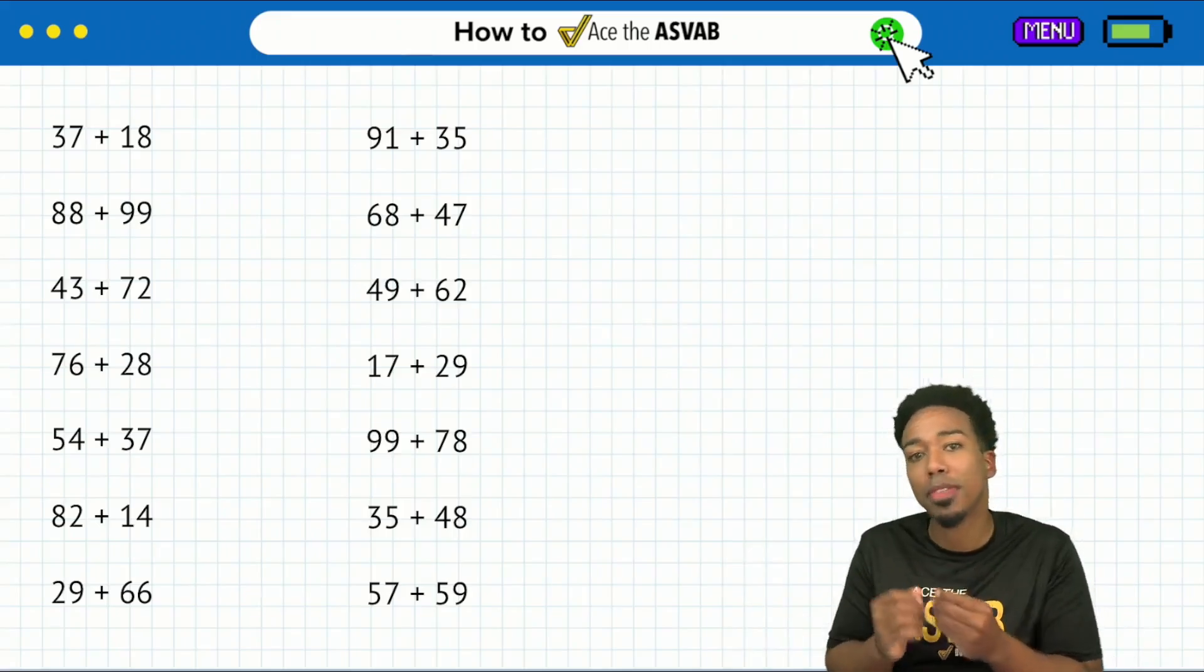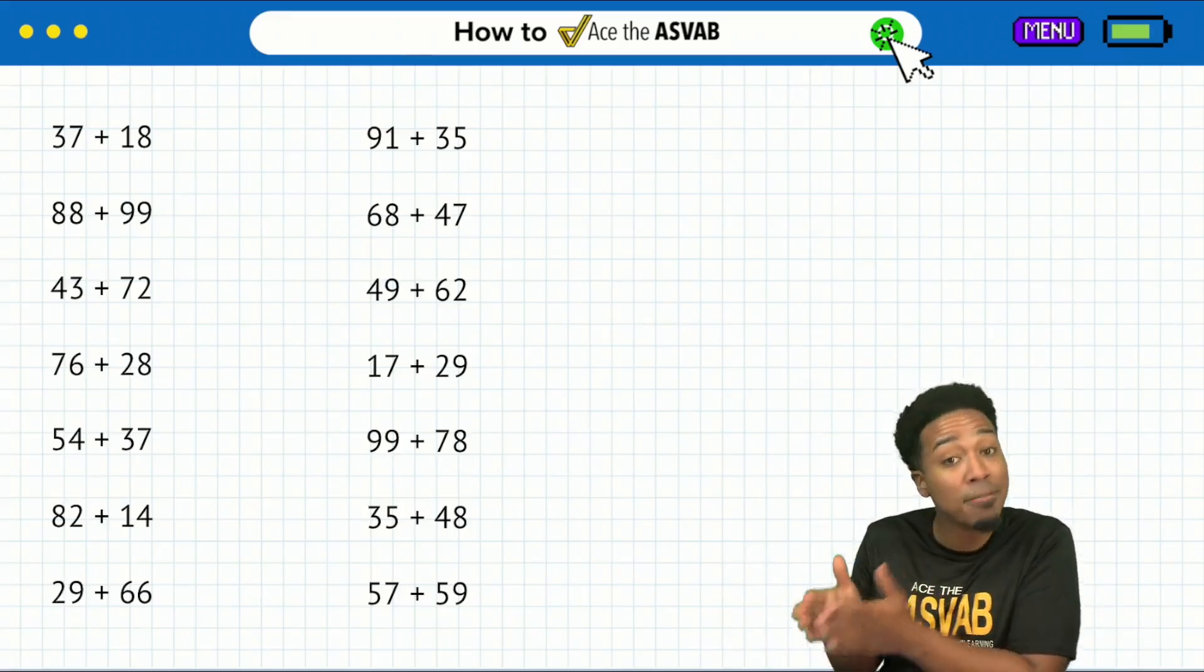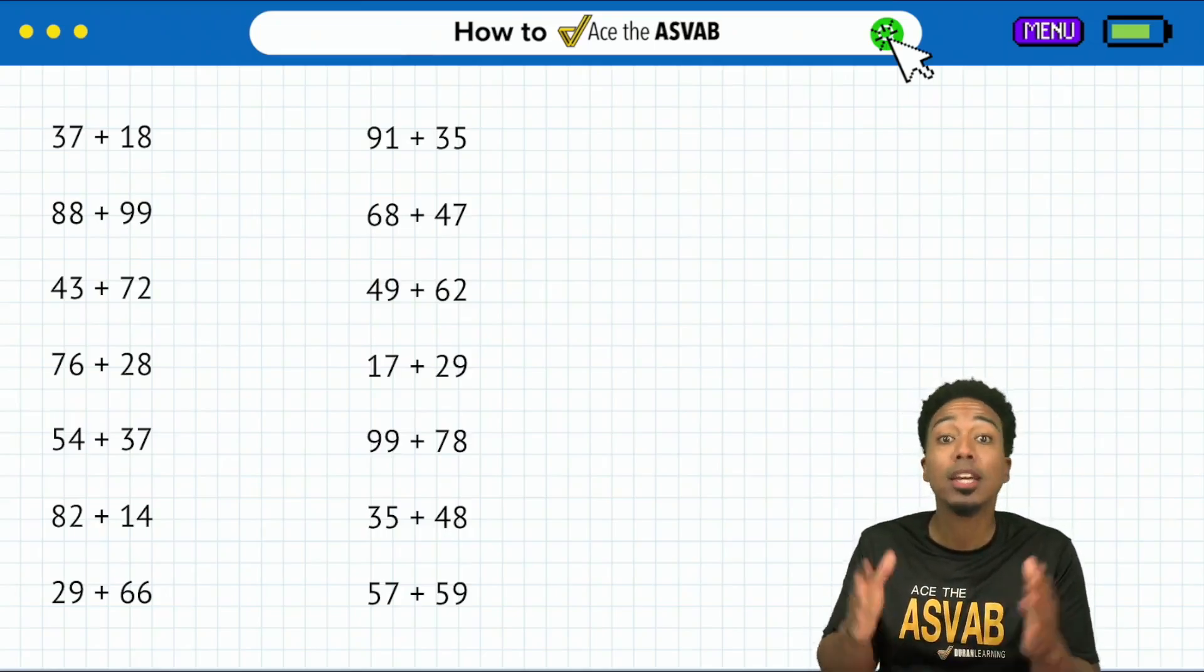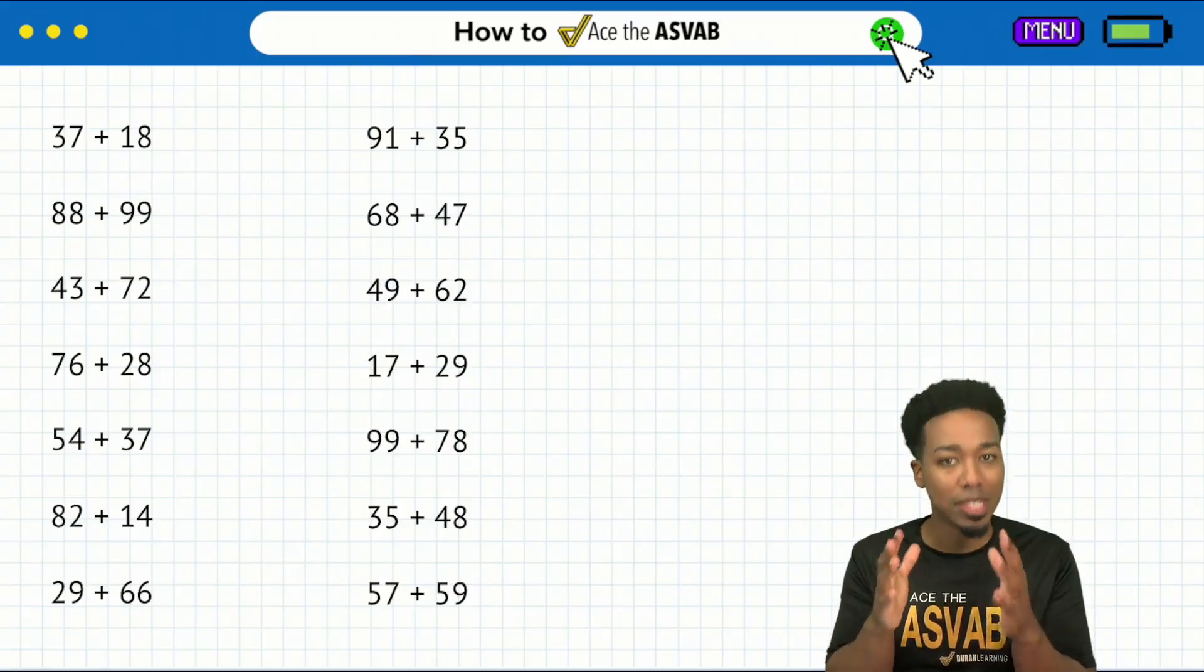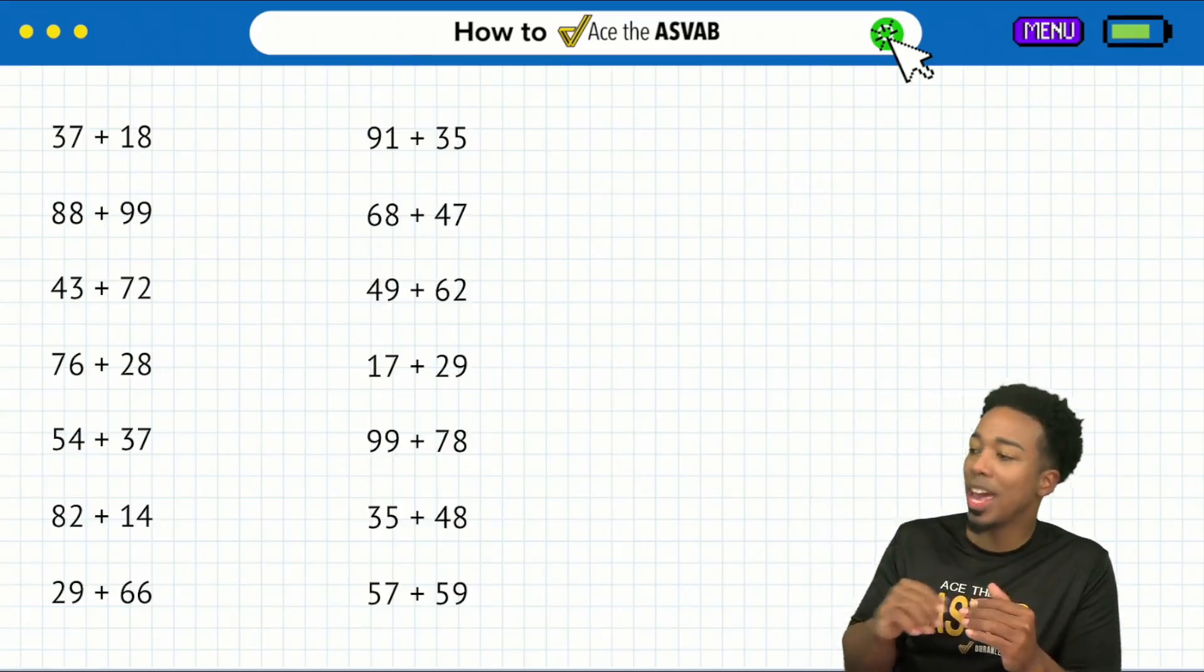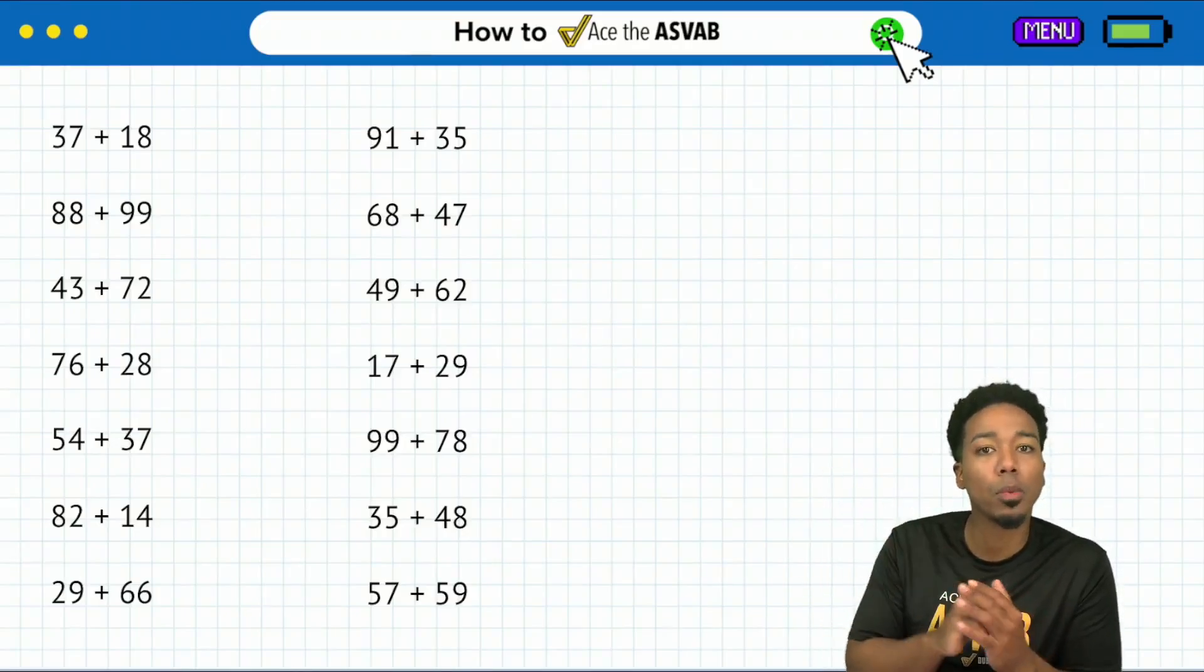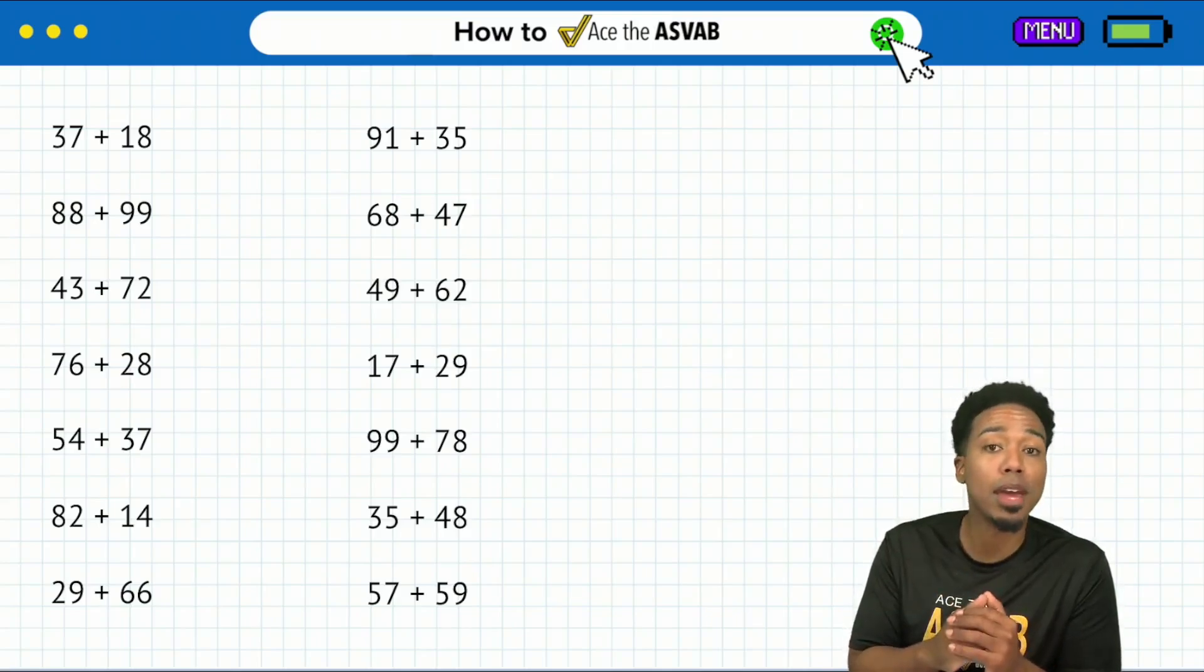So what does mental math help you with? It helps you get an advantage. Two minutes and 26 seconds for each question. You can give yourself so much more time if you can calculate without hesitation.